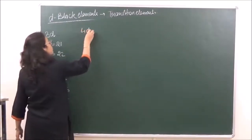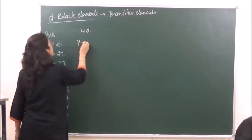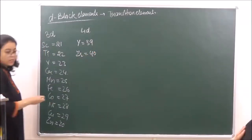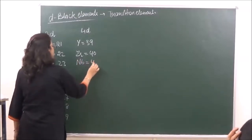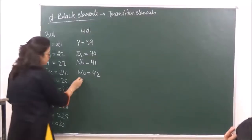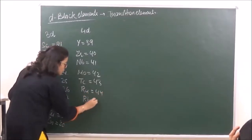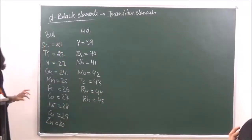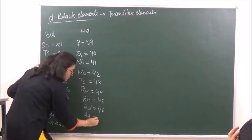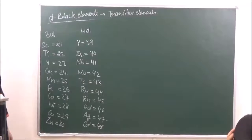The next one is the 4D series in which we fill up 4d, starting from yttrium (39), zirconium (40), niobium (41), molybdenum (42), technetium (43), ruthenium (44), rhodium (45), palladium (46), silver (47), and cadmium (48).